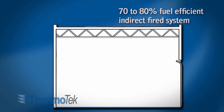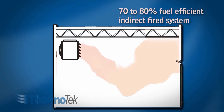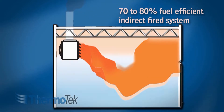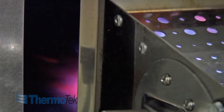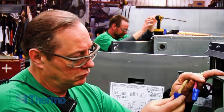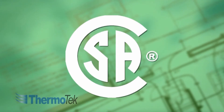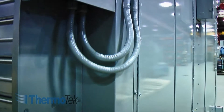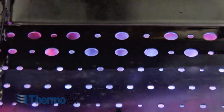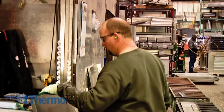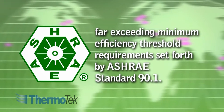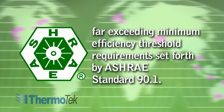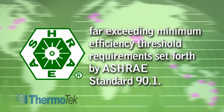Unlike a 70-80% fuel efficient indirect fired system that vents flue gases to the atmosphere, direct fired heating is environmentally clean and is tested to the highest standards for safe combustion rates under the ANSI and CSA guidelines. It's important to understand that direct fired heating is not only safe, but is widely considered a green technology in the industry today, and far exceeds the minimum efficiency threshold requirements set forth by ASHRAE Standard 90.1.